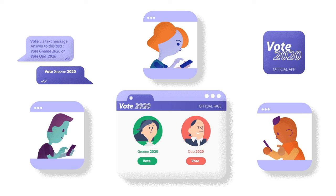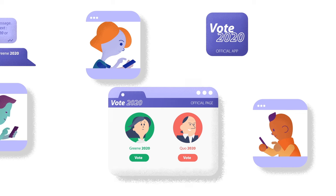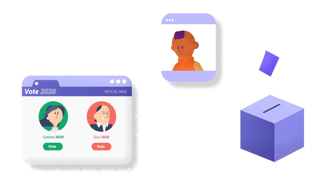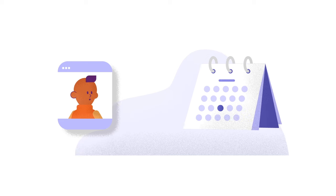The claim isn't too far-fetched. An encrypted digital platform could actually seem safer to young people than the traditional ballot system. Perhaps you could also tell them that the voting day is one day after it actually is.